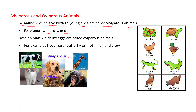Viviparous animals give birth to young ones — examples include cow, cat, donkey, dog, monkey, giraffe, and even human beings. Animals which lay eggs are called oviparous animals. Examples of oviparous animals include frog, lizard, butterfly, moth, hen, and crow.